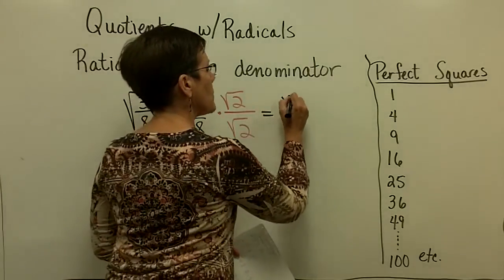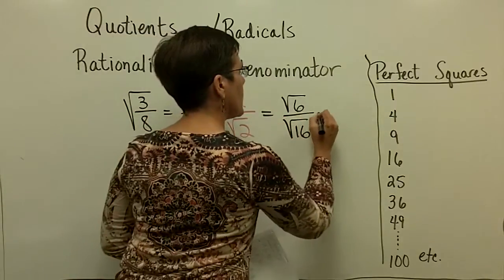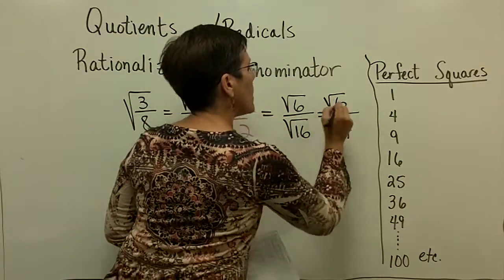And so upstairs, I would have the square root of six. And downstairs here, I would have the square root of 16, which is four, and I'm all done.